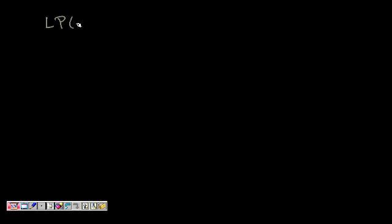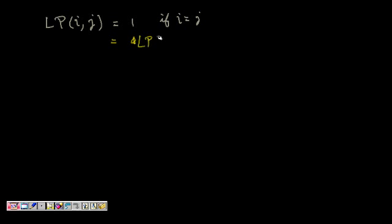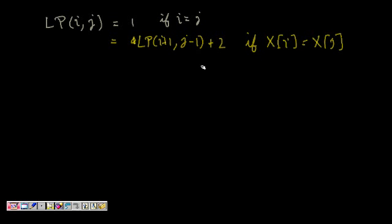Let LP(i, j) be the length of the longest palindrome from letter i to j. LP(i, j) = 1 if i equals j, since there is only one character and it forms a palindrome of length 1. Otherwise, LP(i, j) = LP(i+1, j-1) + 2, if X[i] equals X[j].